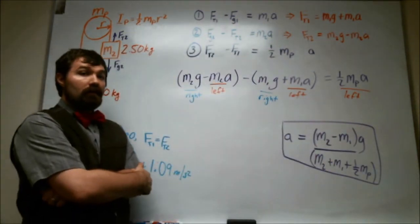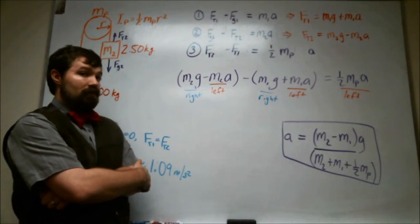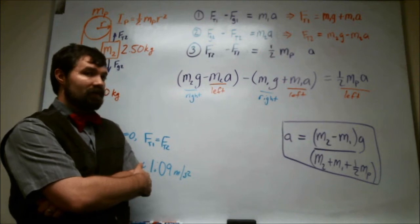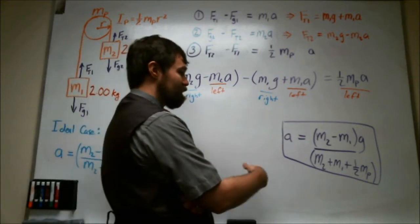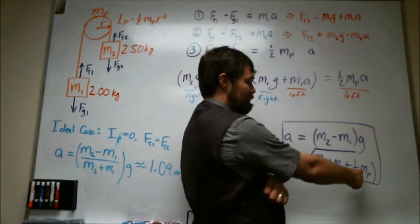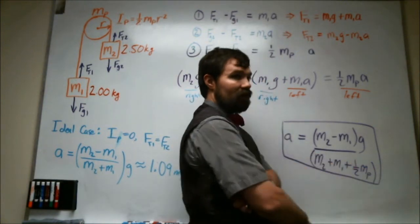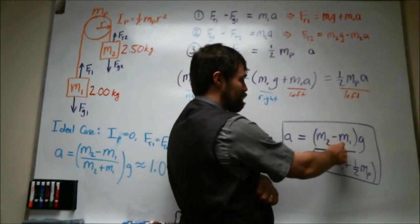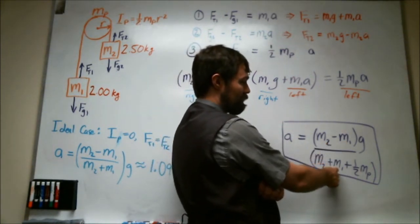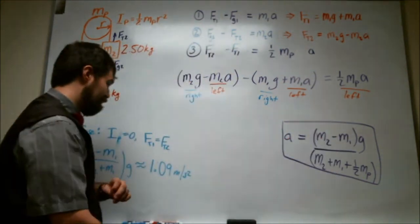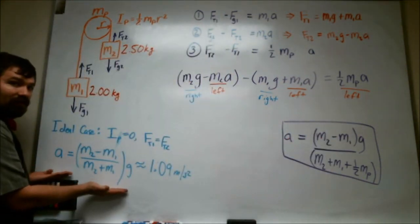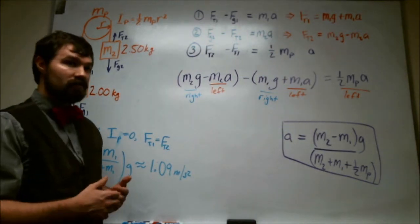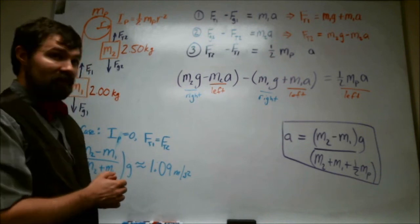So before putting any numbers into this, I'd like to highlight something, which is that if the mass of the pulley is zero, that basically eliminates this last term in the denominator, and so I'd end up with M2 minus M1 over M2 plus M1, all times G. And that was, in fact, what we had for the ideal case, where the mass was zero.